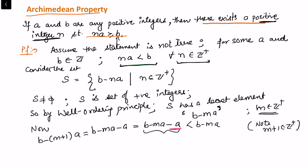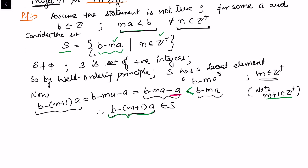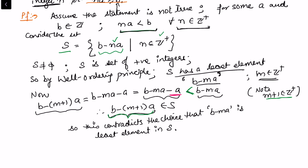This quantity b minus (m+1)a is strictly less than b minus ma, because we are subtracting a from it. So we have found an element smaller than b minus ma. This element b minus (m+1)a belongs to the set S by construction, since all elements of the form b minus na for positive integer n belong to S. But this is smaller than b minus ma, which contradicts our choice that b minus ma is the least element in S. Hence the Archimedean Property holds.